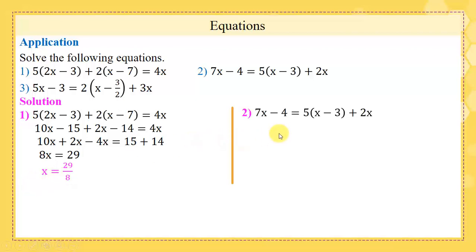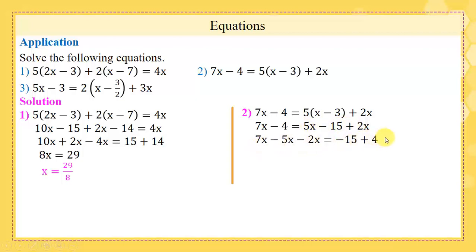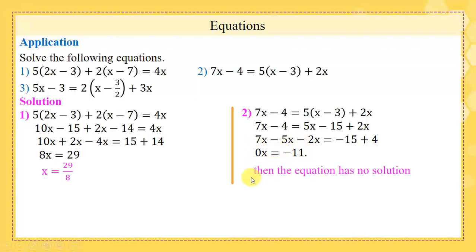Part 2, done the same way: expand in step 1 to get 7x minus 4 equals 5x minus 15 plus 2x. Move numbers to the other side, then reduce to get 0x equals minus 11. Here the coefficient of x, which is a, equals 0, while b is different from 0. Therefore the equation has no solution.